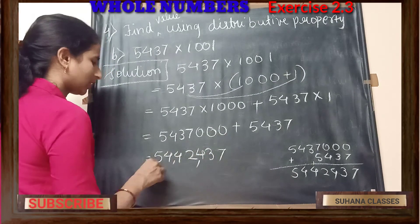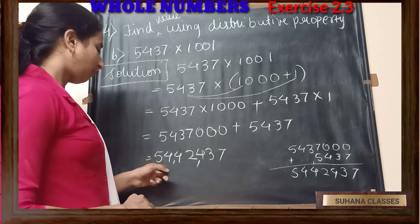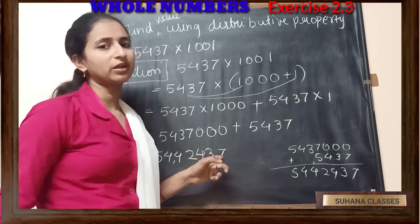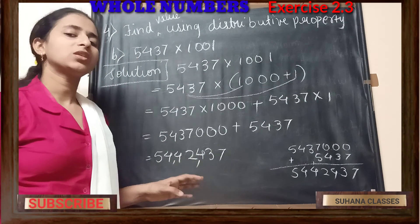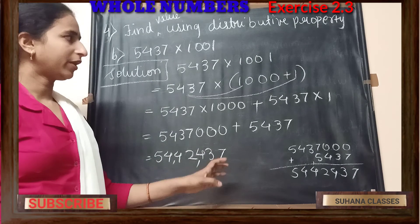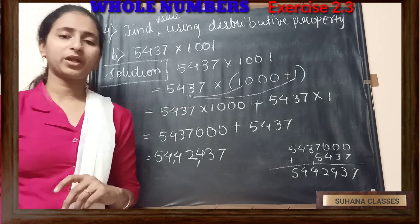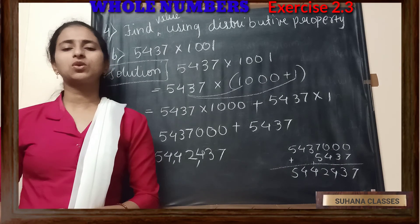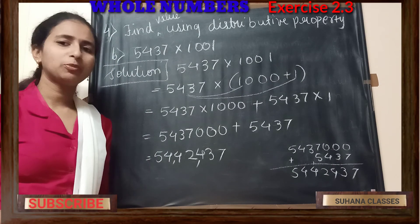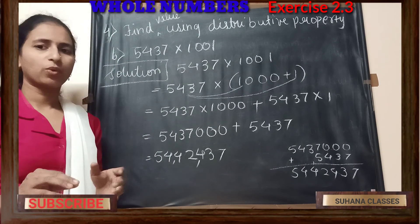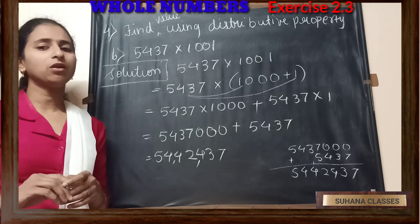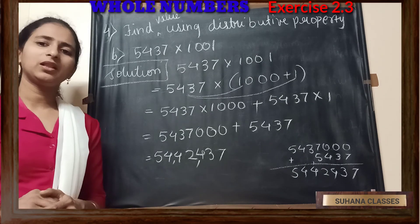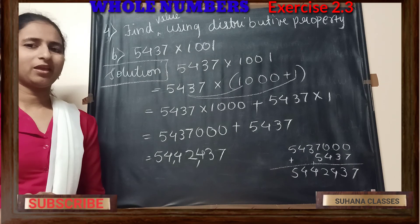So my final answer is 54,42,437. This is our answer. We did it very easily using the distributive property. Hope students have understood the question. Observe it properly, and once you have understood, start solving on your own. In the next class, we will see the next questions. Till then, take care. Bye-bye.